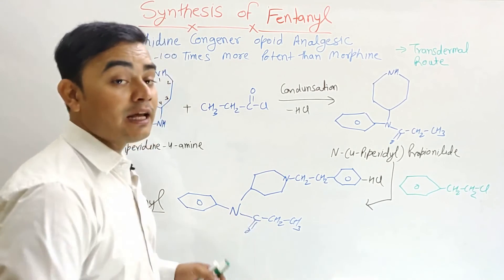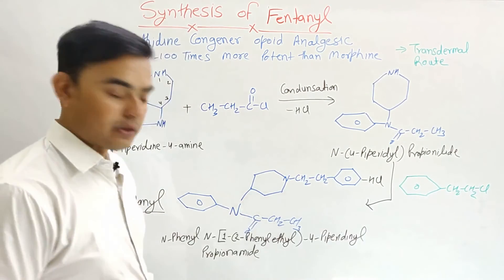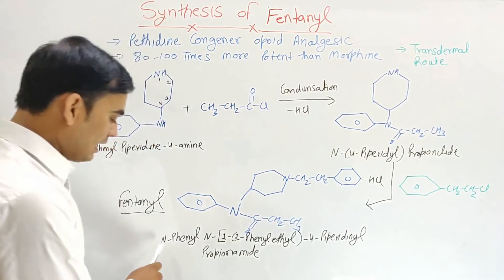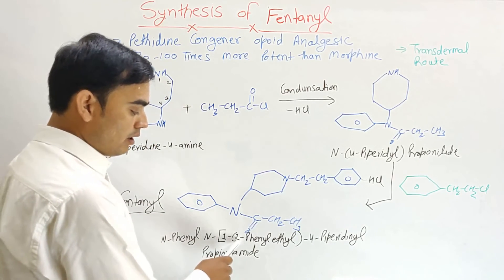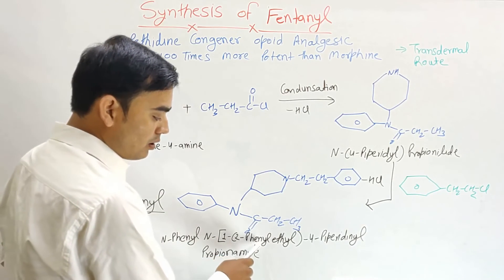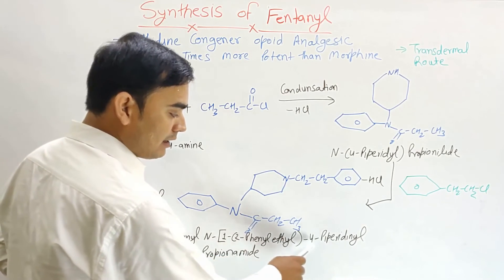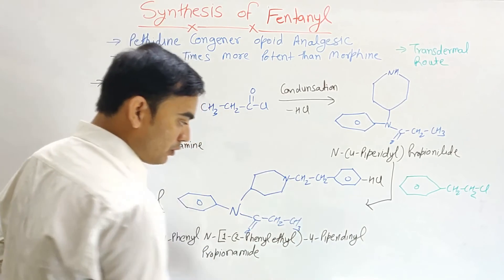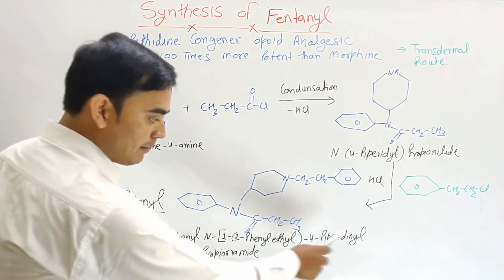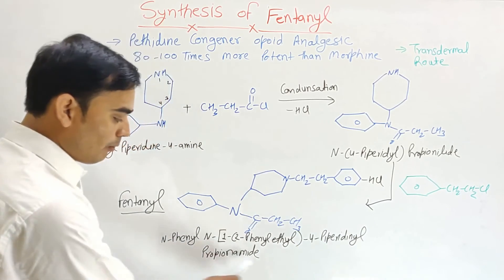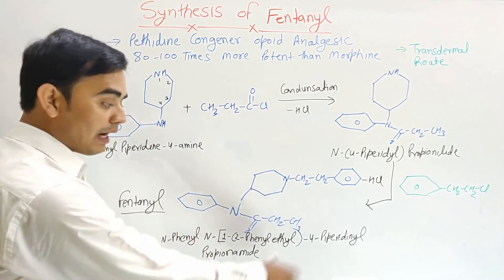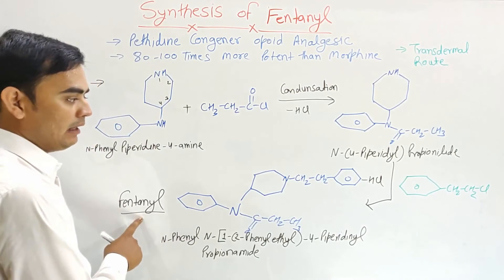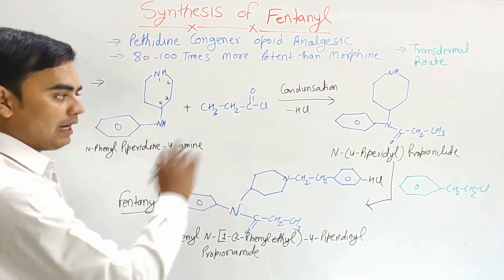According to IUPAC nomenclature, the name of this compound is N-phenyl-N-(1-(2-phenylethyl)-4-piperidyl) propionamide. This is the IUPAC name of fentanyl.